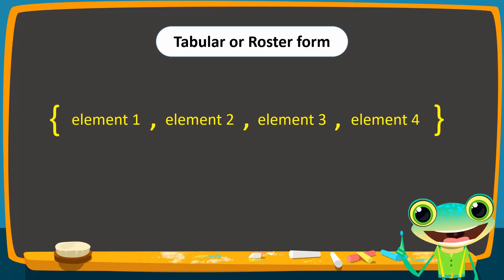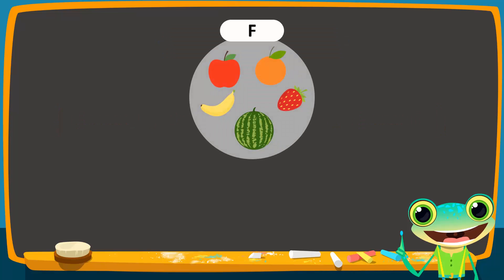From the previous examples, if we represent the set of fruits with F, then set F in tabular form is equal to open brace, apple, banana, watermelon, strawberry, orange, close brace.